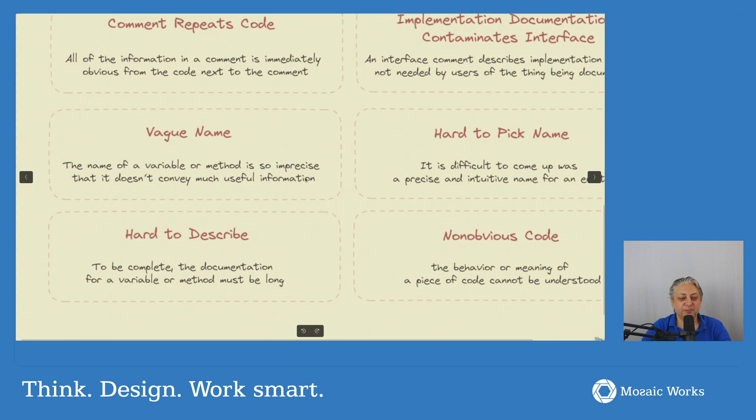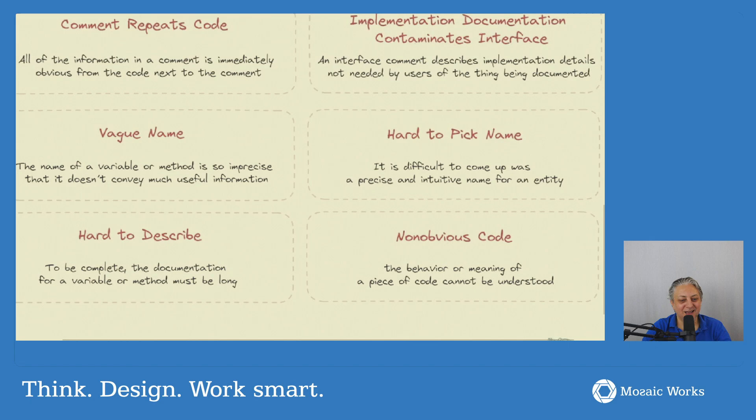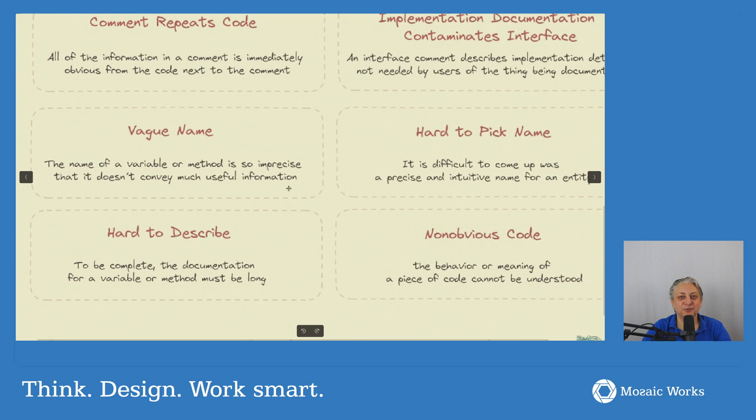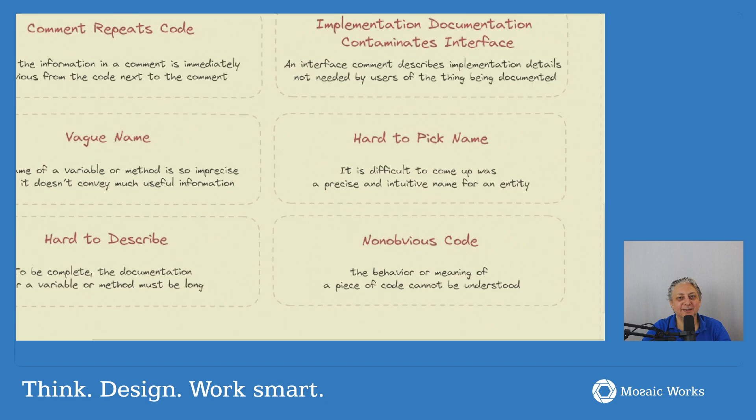Vague name. The name of a variable or method is so imprecise that it doesn't convey much useful information. Naming is a big, big topic. In general what you should do is to figure out names that are precise, that are clear, easy to read, easy to understand. Not as easy as it sounds. But yeah, don't use names that are meaningless or that have meaning only to you or that are funny.